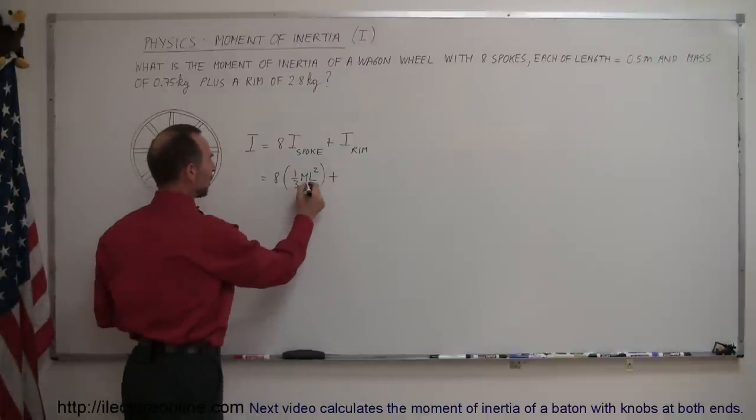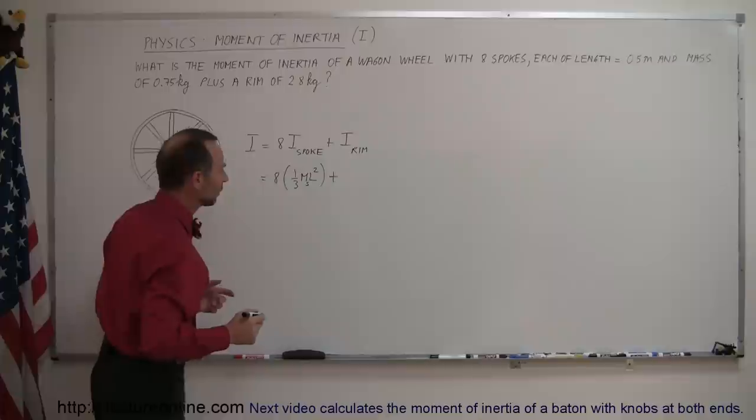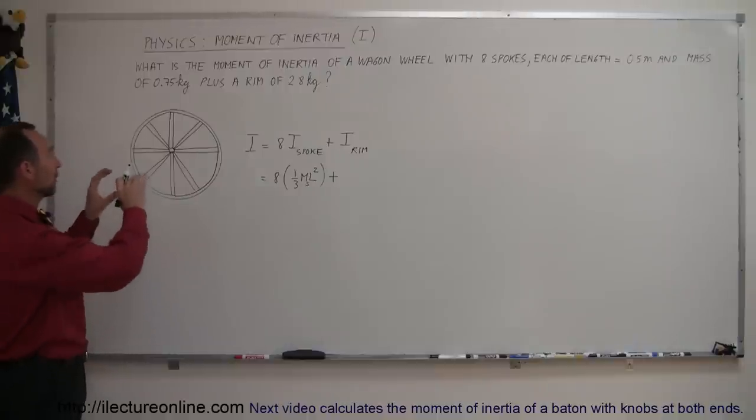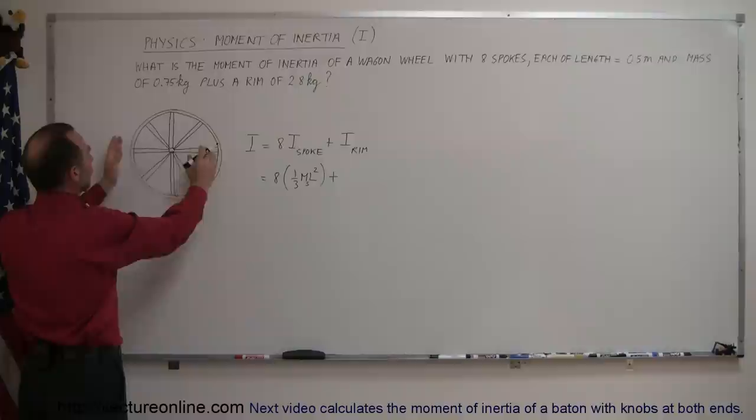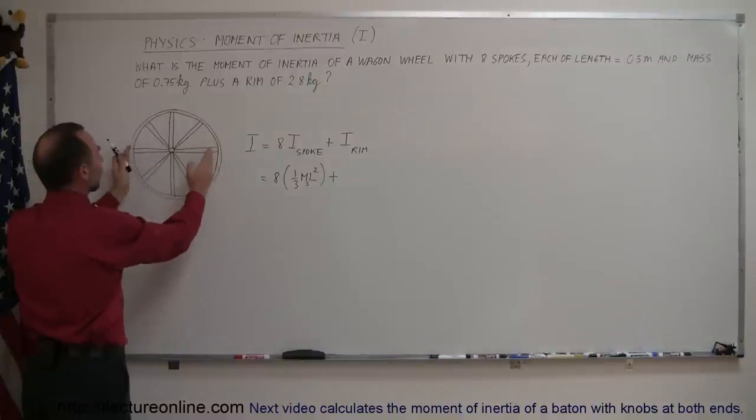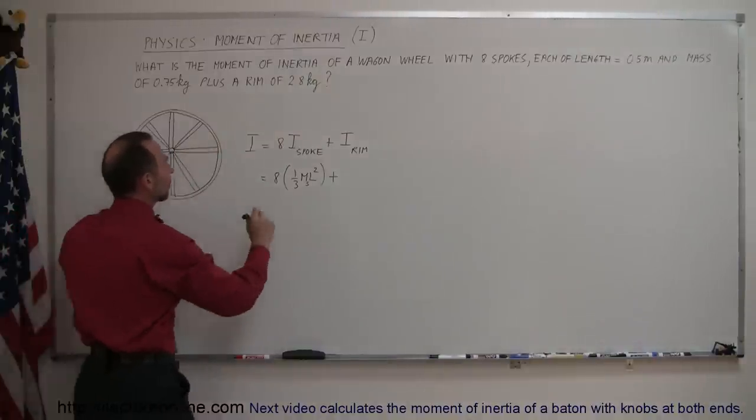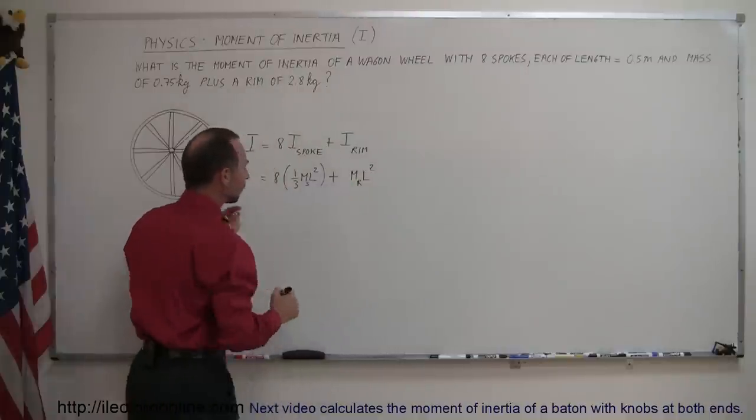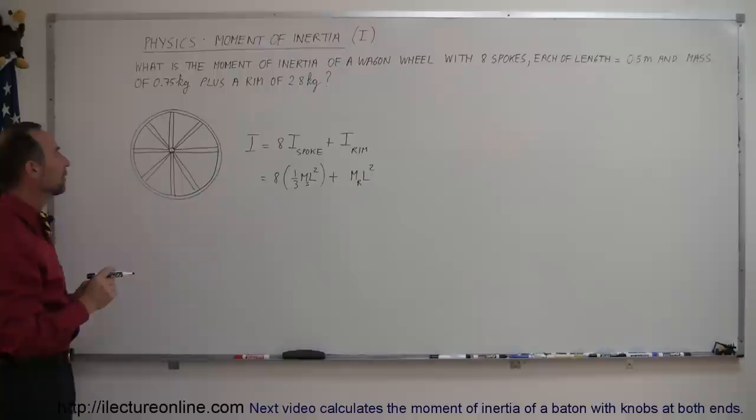And so let's go M of the spoke. So we differentiate the mass of the spoke with the mass of the rim. And so the moment of inertia of the rim is like a solid cylinder, but it's an open cylinder with all the mass at the very end. So that would be equal to the mass of the rim times R squared. In this case R would be L squared. L is the radius of the rim.